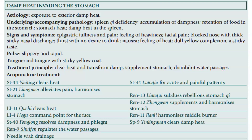Damp heat invading the stomach. Etiology: exposure to exterior damp heat. Underlying accompanying pathology includes spleen chi deficiency, accumulation of dampness, retention of food in the stomach, stomach heat, and damp heat in the spleen. Signs and symptoms: epigastric fullness and pain; feeling of heaviness; facial pain; blocked nose with thick sticky nasal discharge; thirst with no desire to drink; nausea; feeling of heat; dull yellow complexion; sticky taste; slippery and rapid pulse; tongue red with sticky yellow coat.